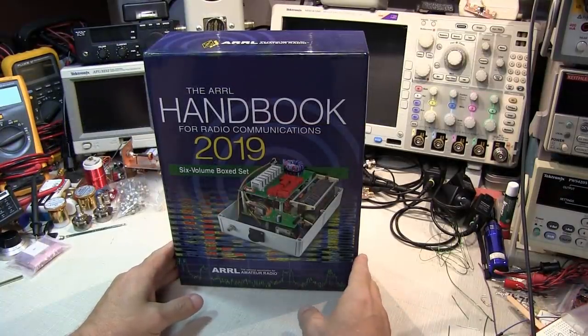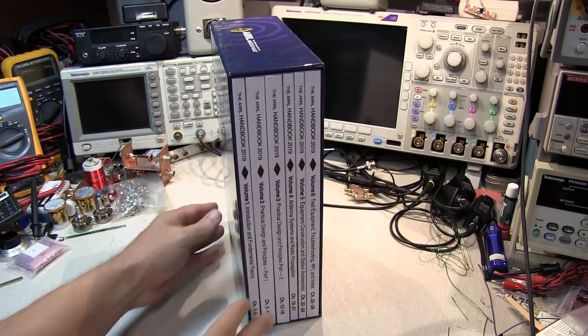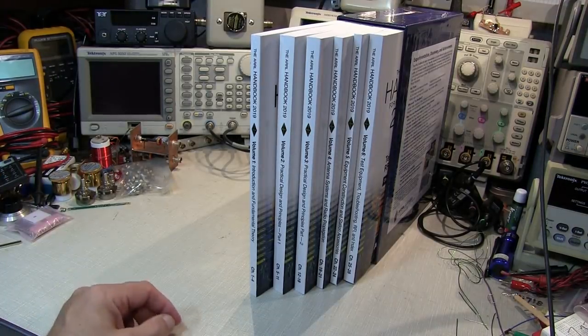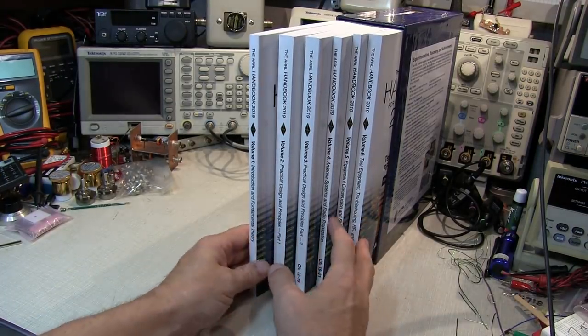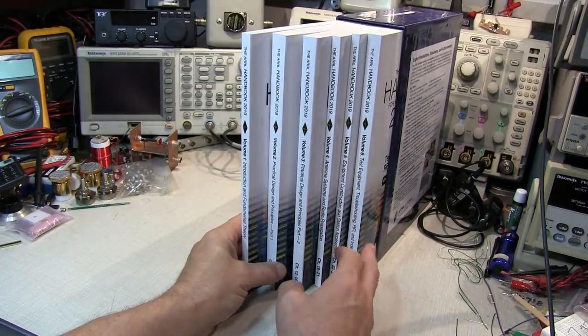The 96th edition is available in a very handy six-volume boxed set. All 28 chapters of the main volume are just broken up into individual volumes that are arranged by topic area.